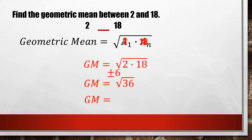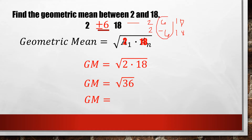It could be positive 6 or it could be negative 6. Meaning our sequence could be 2, 6, then 18. Or it could be 2, negative 6, then 18. Any of these two values can be our geometric mean. Still, this is a geometric sequence.